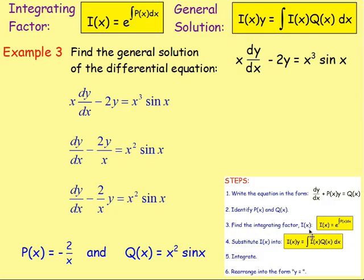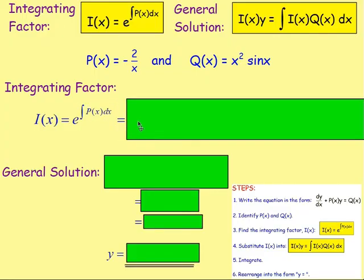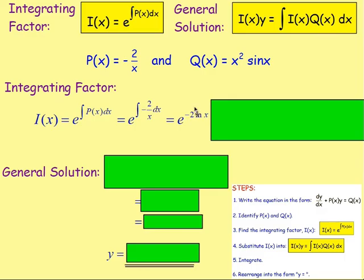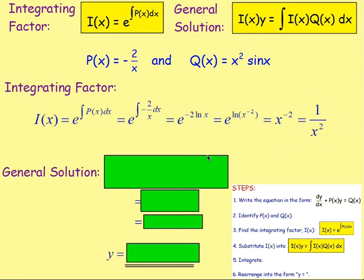From there, the next step: get the integrating factor. The integrating factor is e to the power of the integral of P(x), which equals e to the power of the integral of negative 2 over x. If we integrate negative 2 over x with respect to x, the negative 2 stays as it is, and 1 over x integrates to ln x. So that gives us e to the power of negative 2 ln x. You can move that negative 2 up to the top, giving e to the power of ln x to the power of negative 2. The exponential and the log are inverses, so they cancel, leaving x to the power of negative 2. Rewriting with a positive index, that's 1 over x squared.